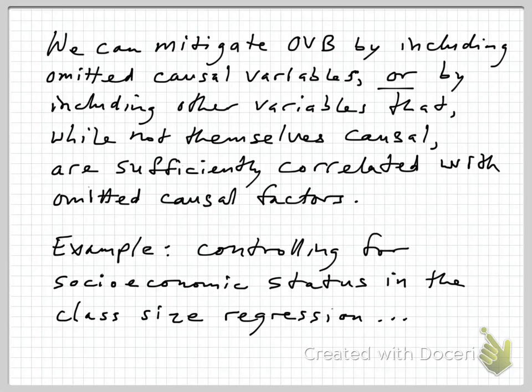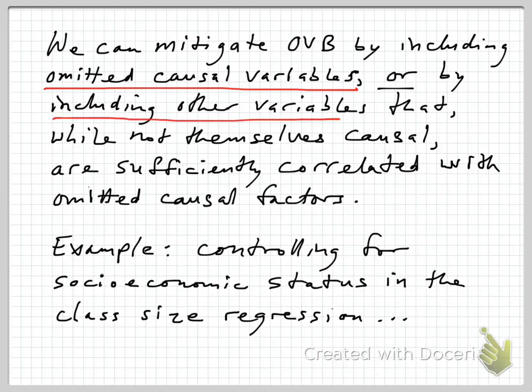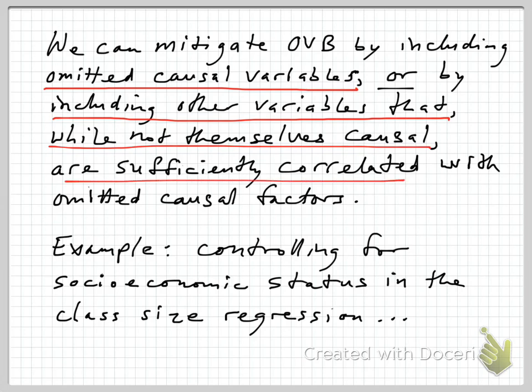We could mitigate or eliminate omitted variable bias by including omitted causal variables. That is, if we think we understand the process determining the dependent variable Y, we might try to include variables for all the causal factors that affect Y, especially those correlated with our variable of interest. But we don't really need to identify all the causal variables — we could include other variables that, while not themselves causal, are sufficiently correlated with the omitted causal factors to effectively control for those and eliminate omitted variable bias.